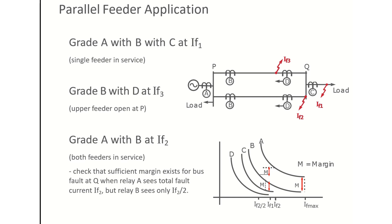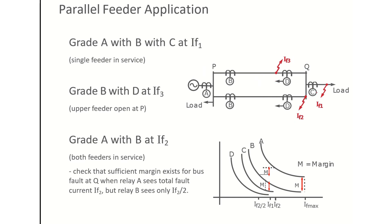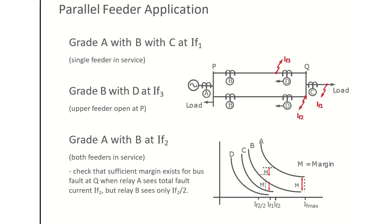In this example, feeder relays nearer to the load must be directional relays and all other relays should be non-directional. The direction of operation is set such that if current flows opposite to the load current direction, the relay will trip. Relay C is non-directional because when any fault occurs on either feeder, the load cannot feed current back in the reverse direction through relay C.